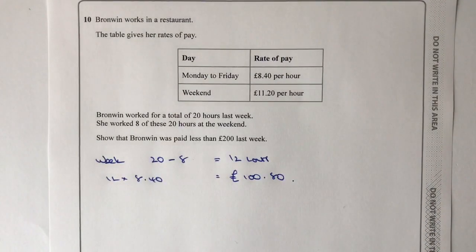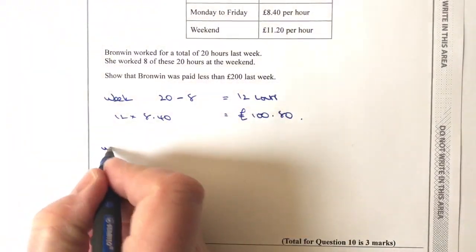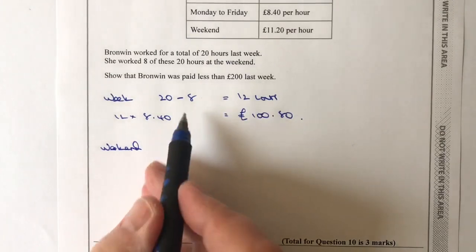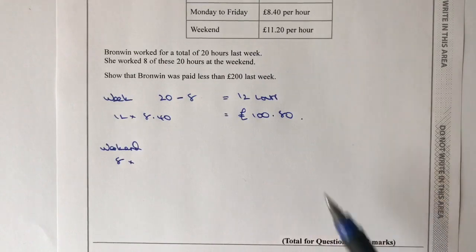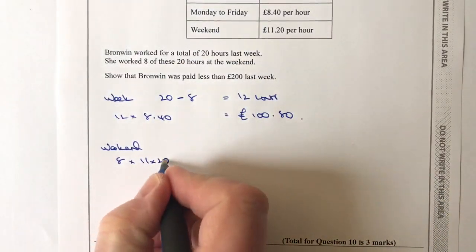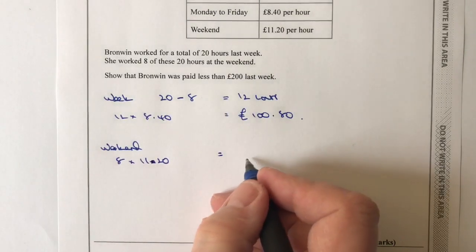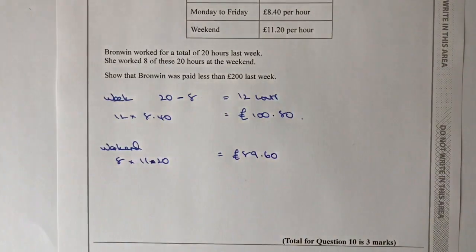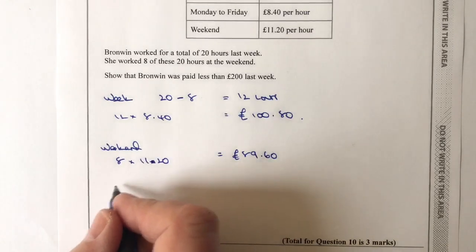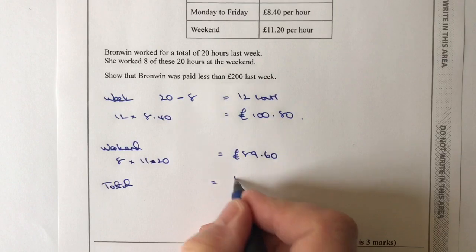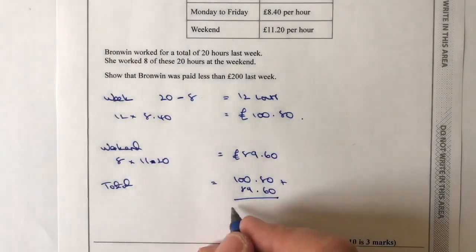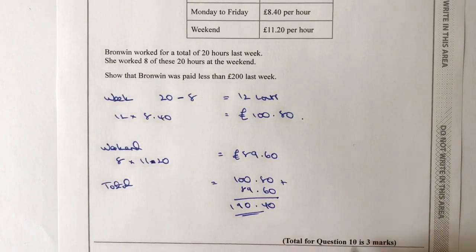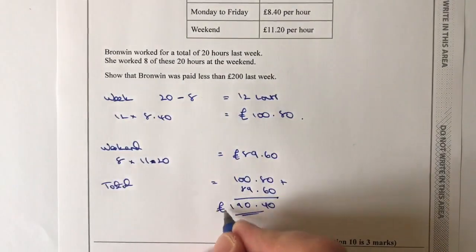Now for the remaining weekend hours: she works eight hours at the weekend rate of £11.20 per hour. So 8 times £11.20 gives £89.60. Adding that to her weekly earnings: £100.80 plus £89.60 gives a total of £190.40. So she was paid £190.40, which is indeed less than £200.